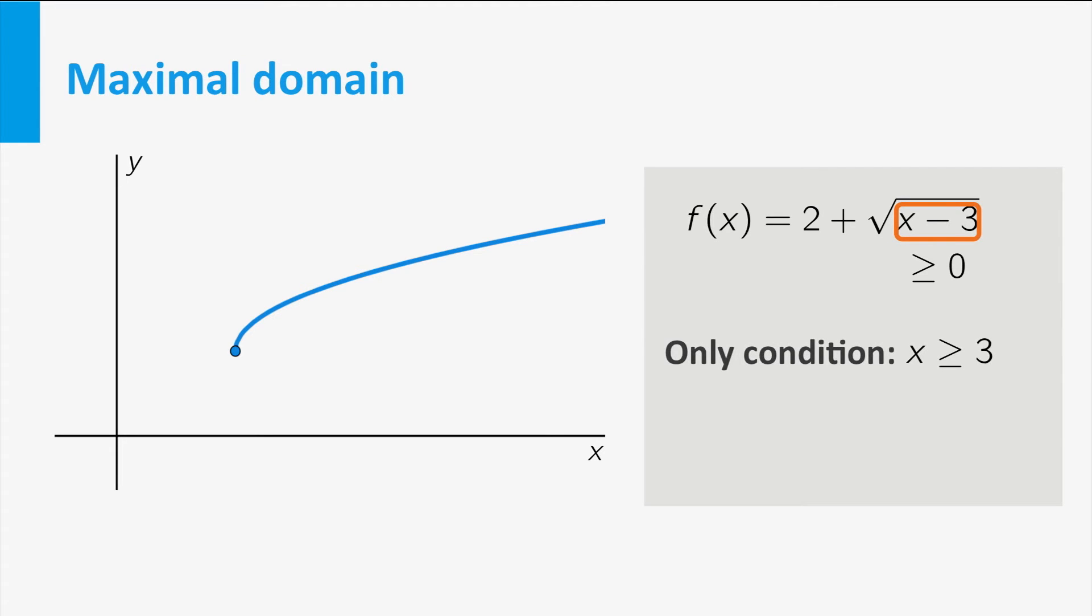That is, x must be larger than or equal to 3. The set of such x is the largest possible domain we can choose, called the maximal domain. In this case, it is the interval from 3 to infinity, including 3.